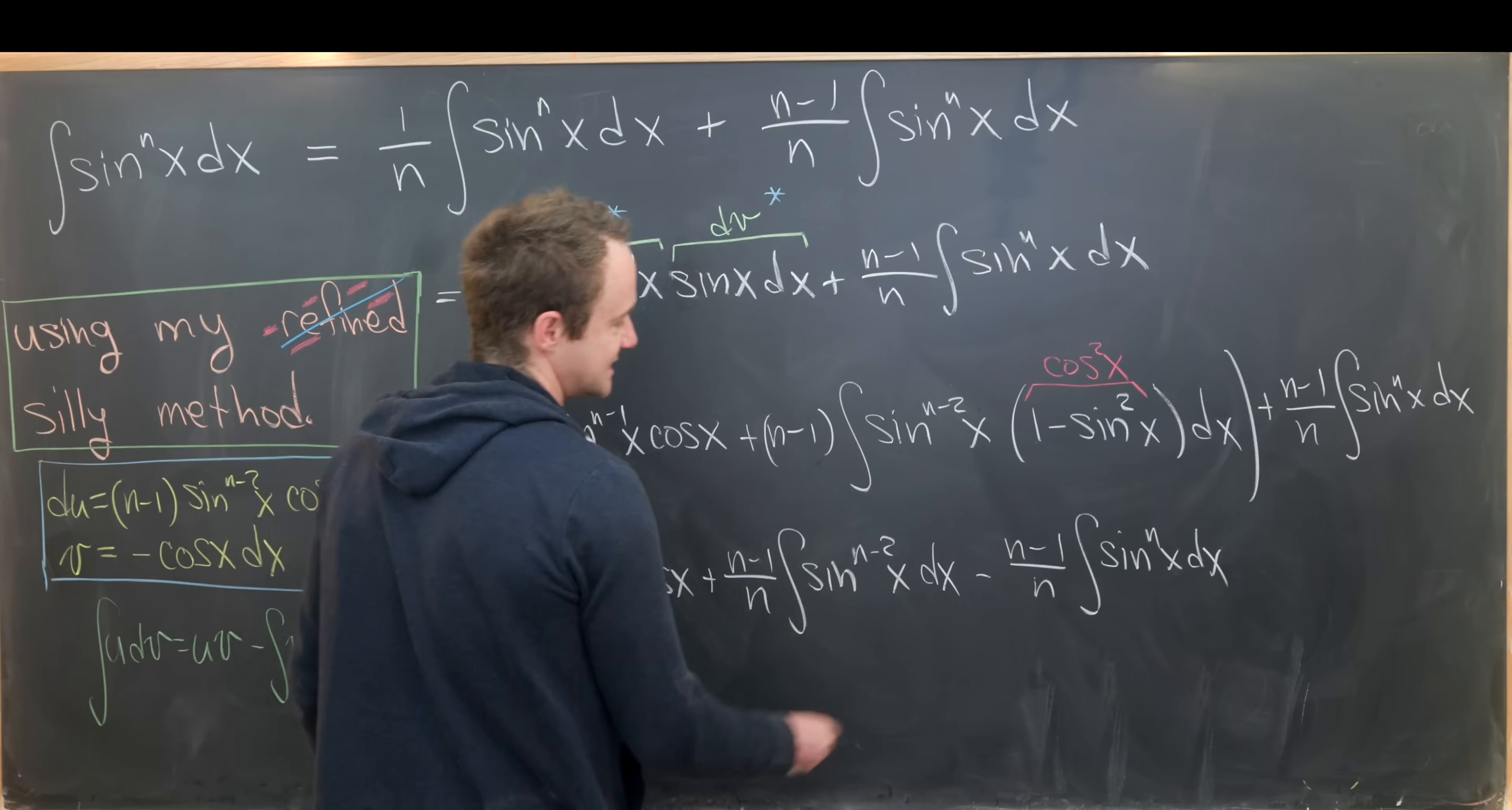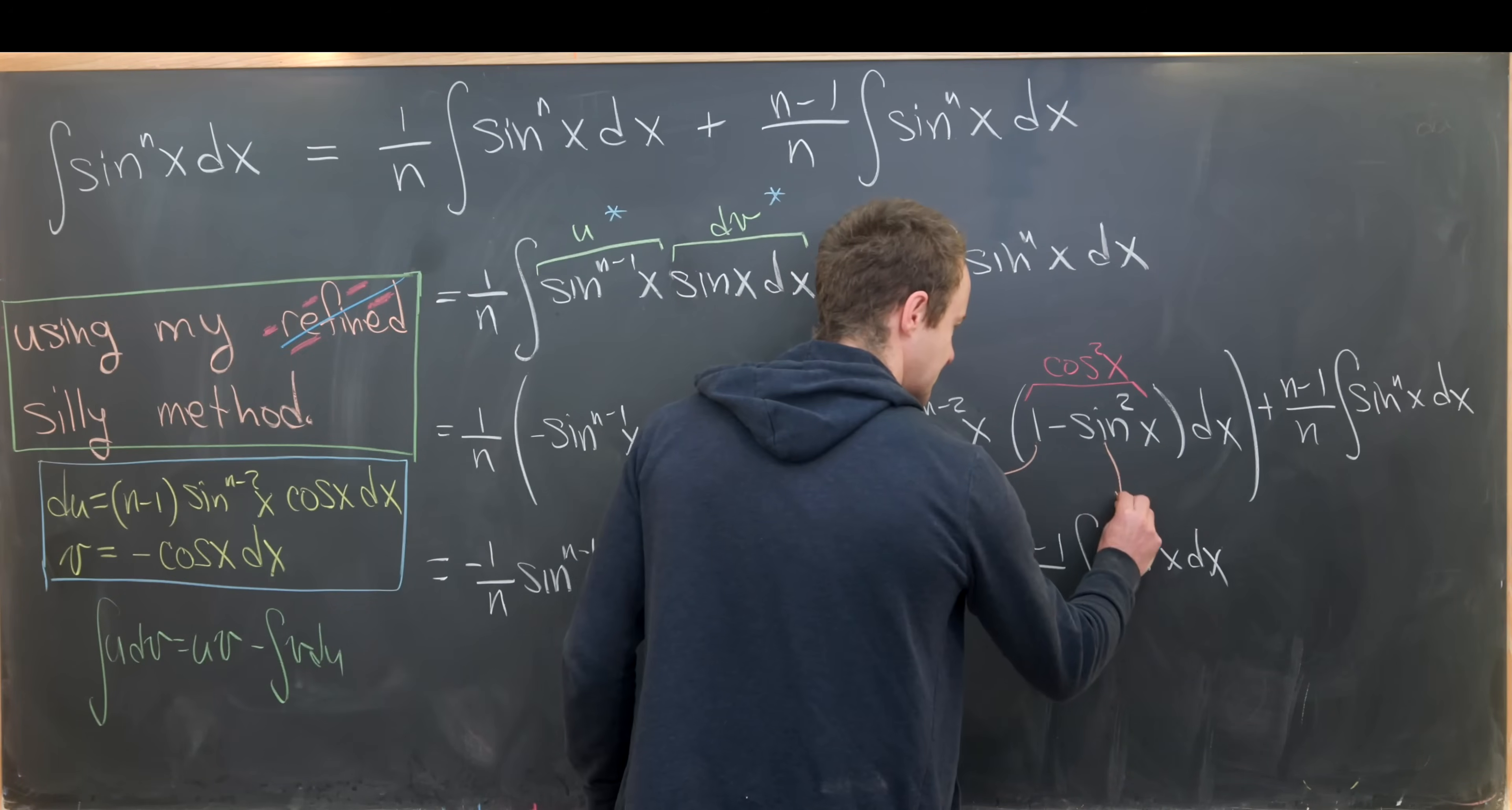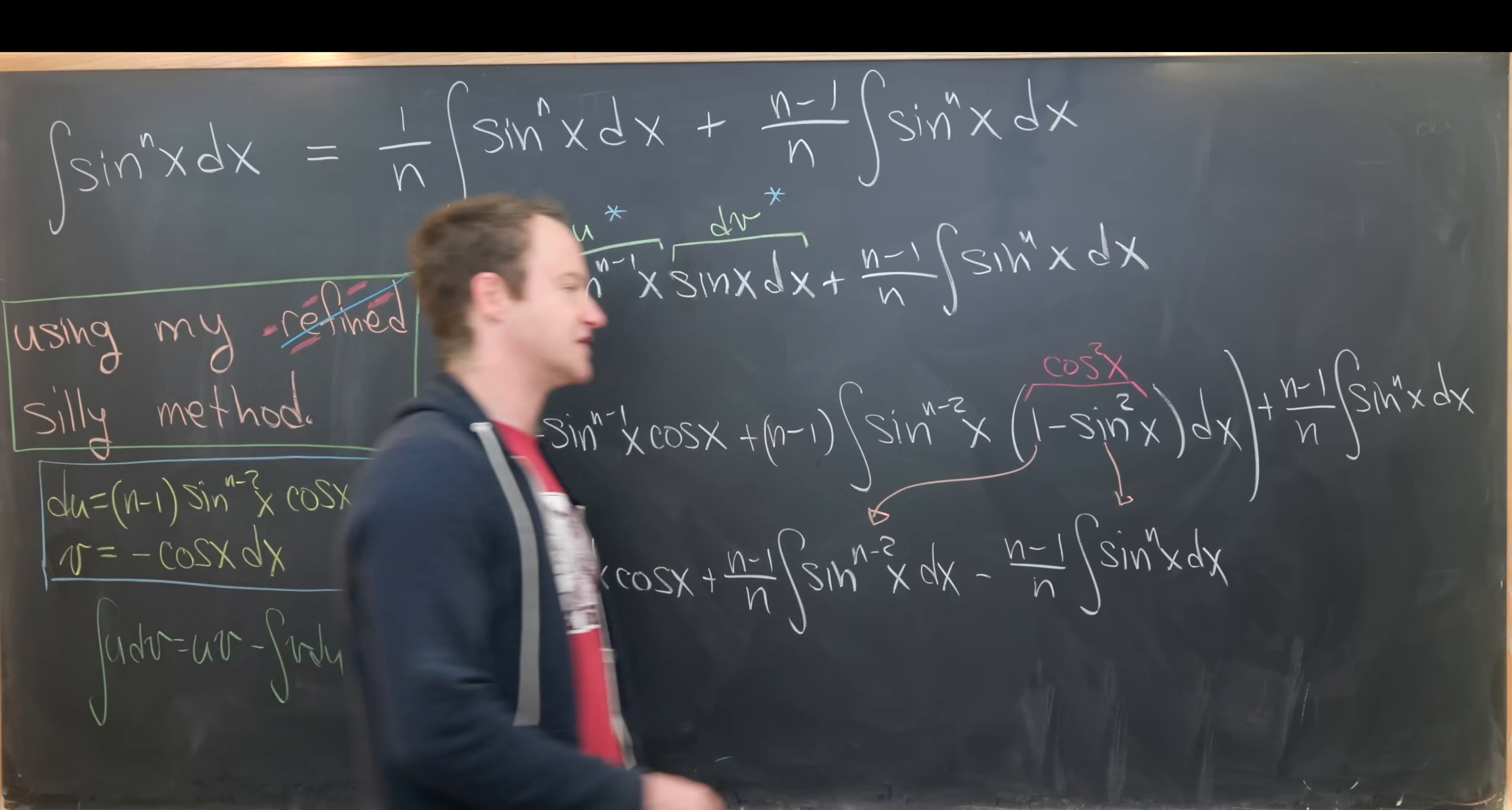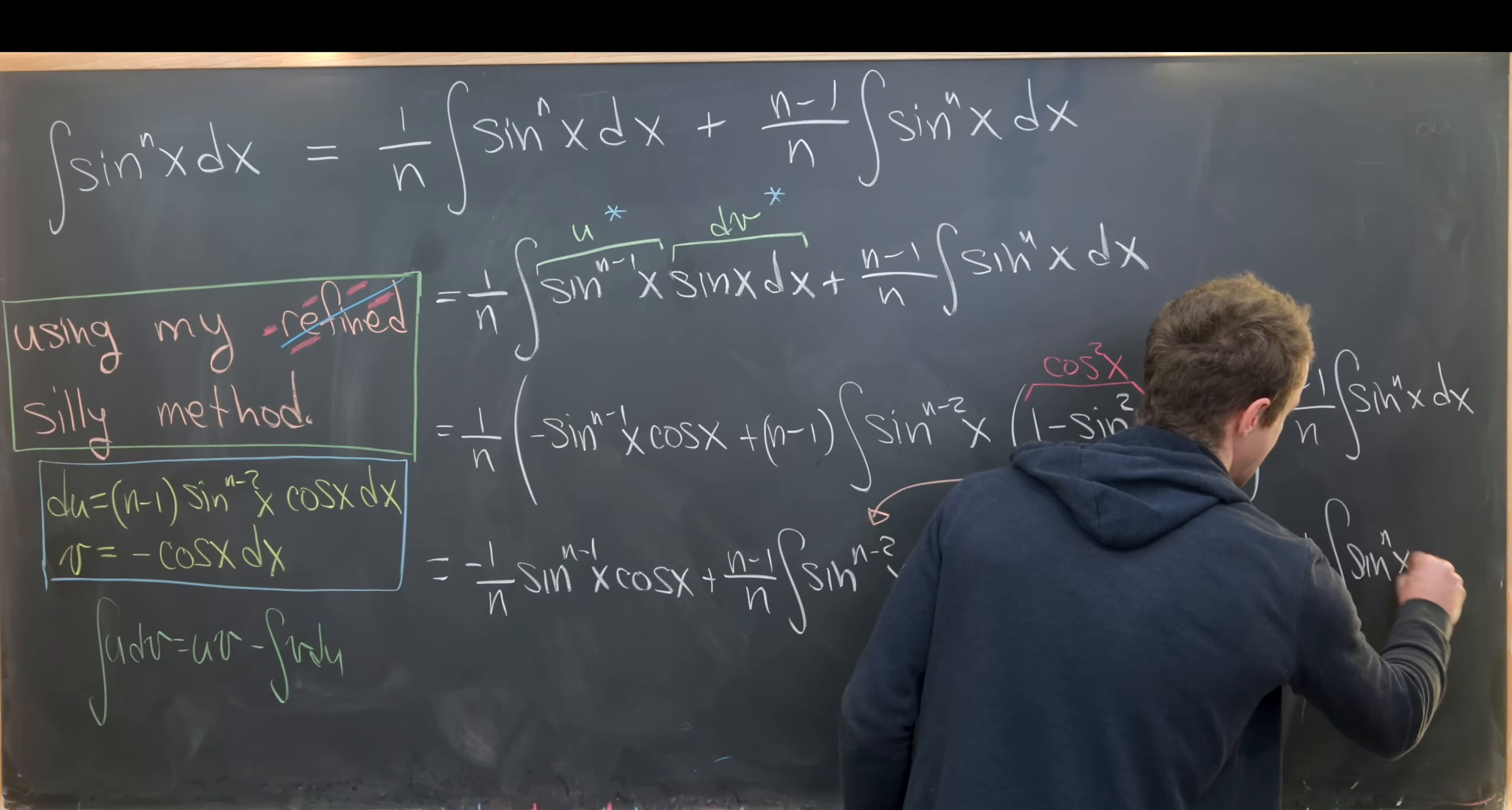So let's maybe sketch that out. This multiplication with the number one gives us this integral. And this multiplication with sine squared gives us this integral. And then furthermore, we can just bring this last integral down, n minus one over n integral sine to the n x dx.